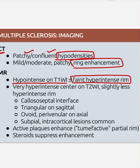On MRI, lesions present mainly at the callosal-septal interface, appearing triangular on sagittal scan. They are ovoid or perivenular on axial views. Intracortical lesions are also common. Active plaques enhance on contrast, and can appear tumefactive or show partial ring enhancement. On treatment with steroids, within three to four days this enhancement will be suppressed.